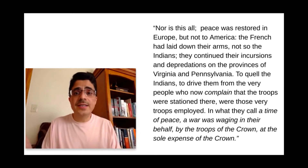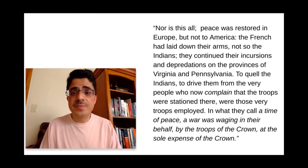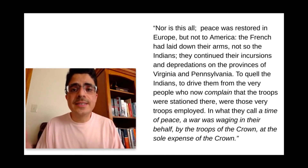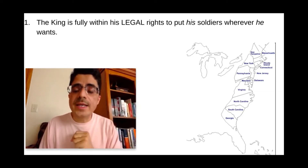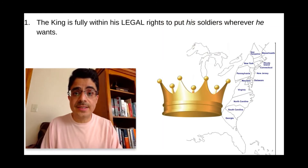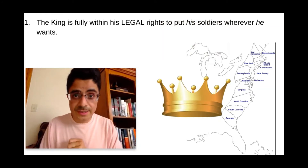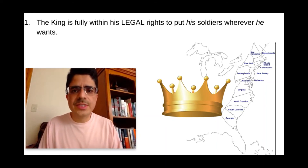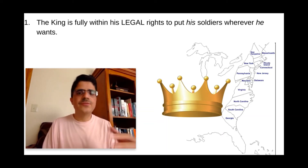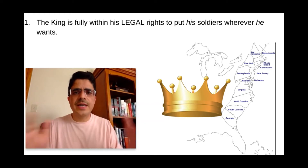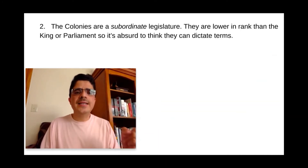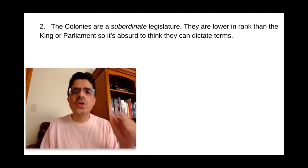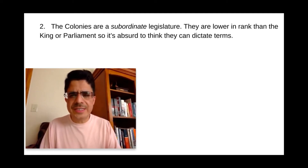This is a devastating critique of the one line of Thomas Jefferson's — because that's all he ever says about it: quartering of troops around us. So let's quickly summarize John Lind's defense. Number one, the king is fully within his legal rights to put his soldiers wherever he wants — it's his territory. Everything he's doing is legal and not against the Constitution. Parliament is entirely for it. The king wasn't doing anything illegal. Number two, the colonies are a subordinate legislature, lower in rank than the king or parliament. So it's absurd to think that they can dictate terms.